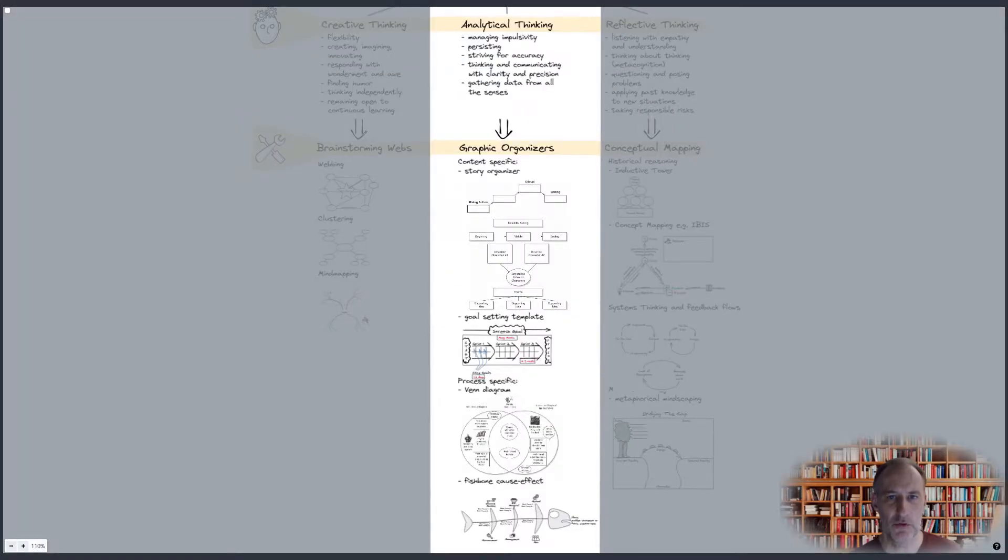The next set of tools in our toolbox are for analytical thinking. These tools help you manage impulsivity, support persistence and facilitate accuracy. The goal here is to gather and process data from all senses and to communicate your thoughts with precision and clarity.